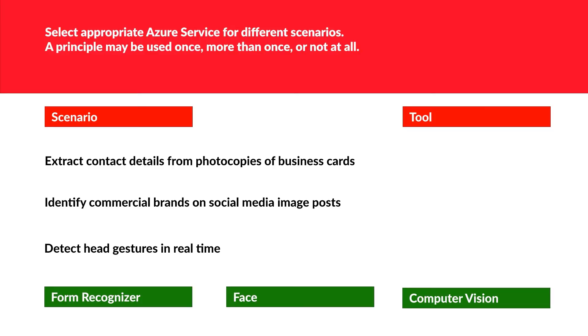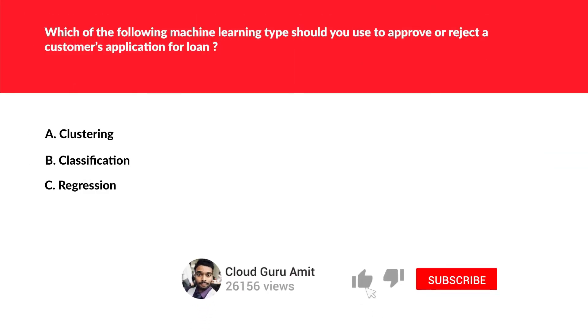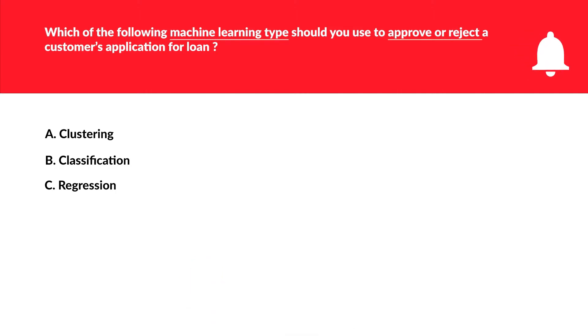Welcome to Part 6 of AI-900. If you have missed my previous parts please do check them out, and if you haven't subscribed to my channel yet, please subscribe and press the bell. I've marked the keywords for this question: machine learning type and approve or request.